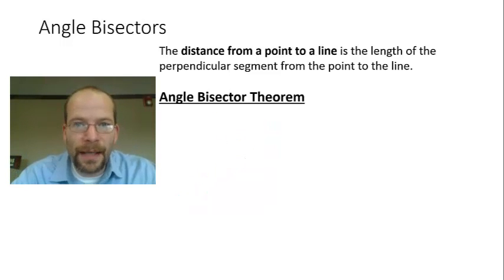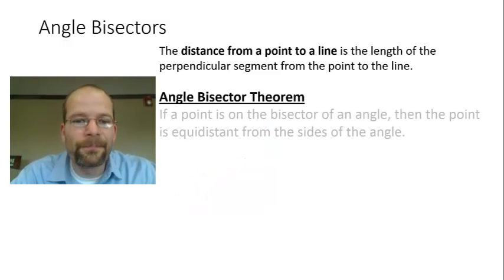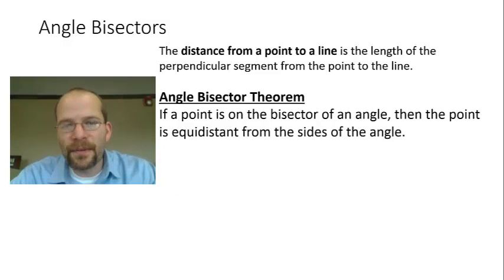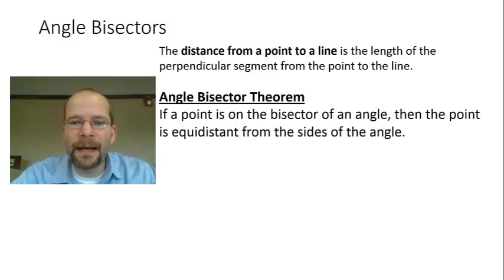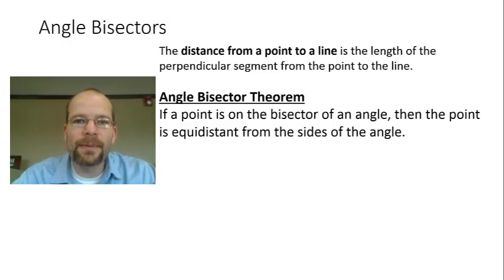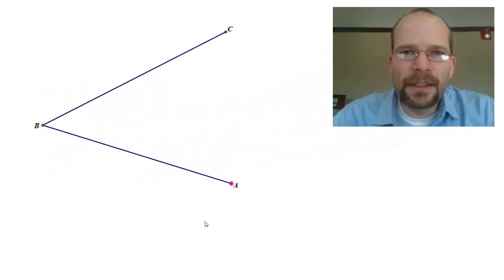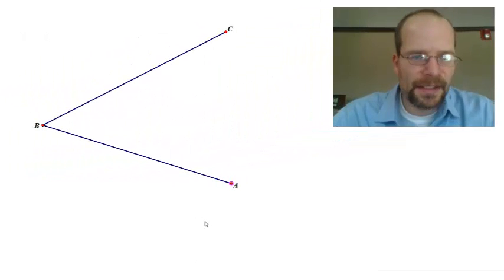This leads us to the angle bisector theorem. The angle bisector theorem says if a point is on the bisector of an angle, the point is equidistant from the sides of the angle. Let's take a look at that here in this context.